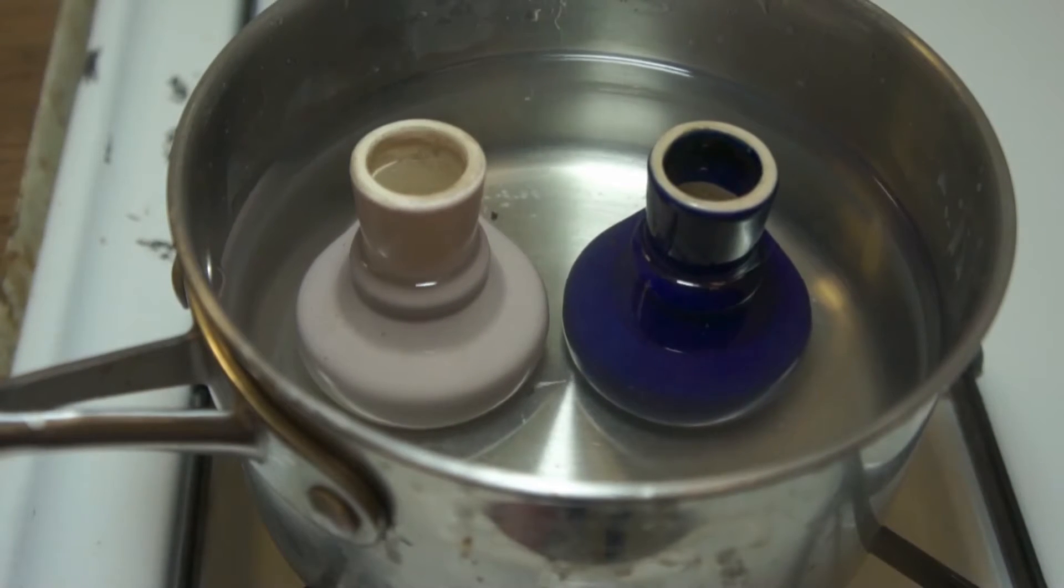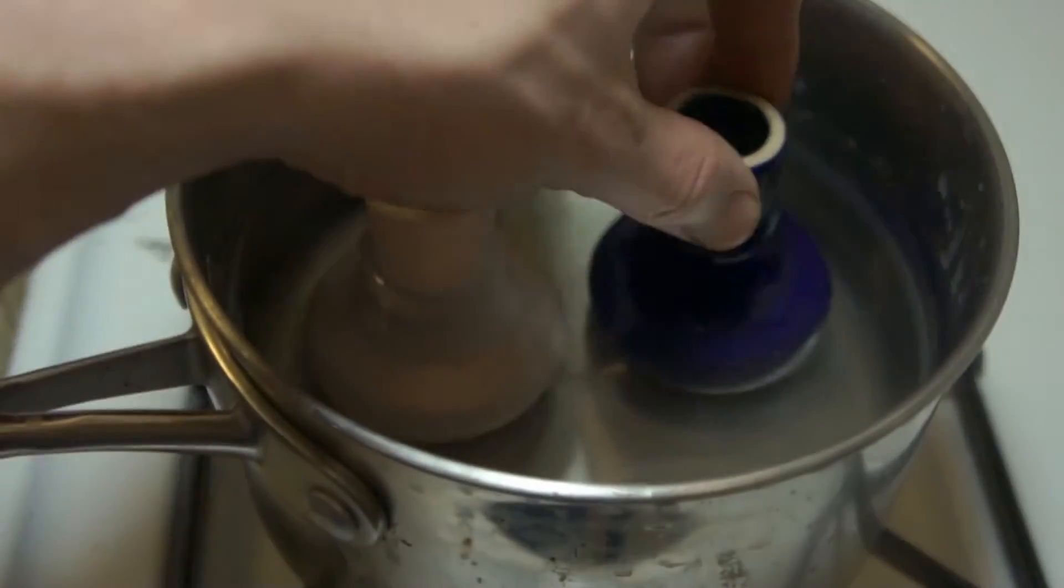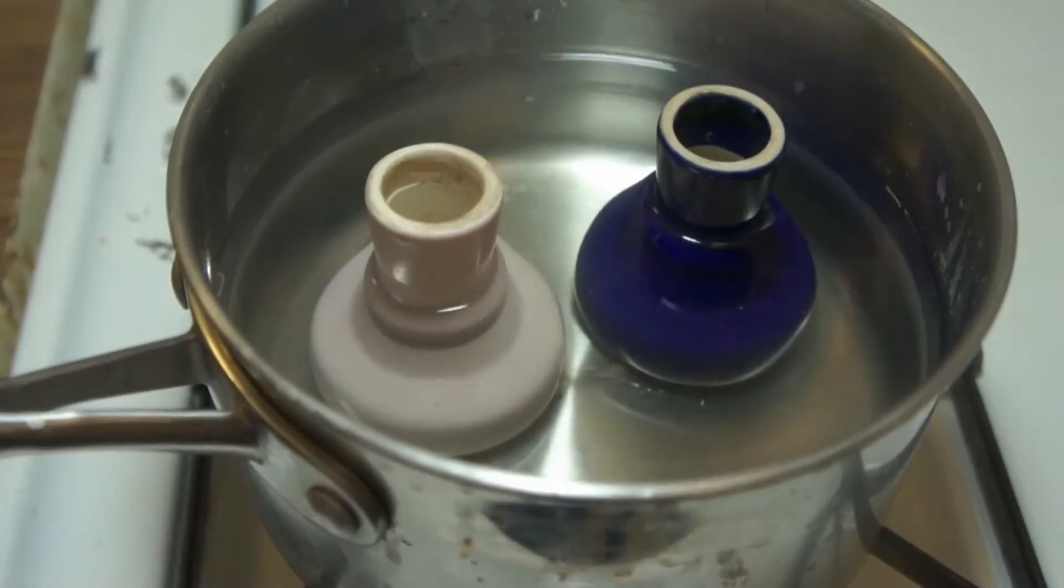Alright, same as last time, we're starting in cool water so that these bowls can come up to temperature relatively slowly. And then we're going to put some OxyClean in here once these start boiling and we'll see what happens.